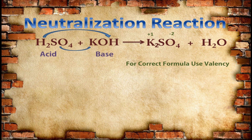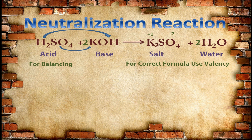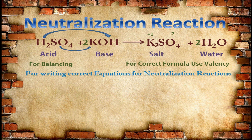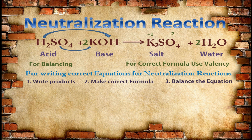This is the formula of the salt K₂SO₄ and H₂O is water. You need to balance the equation — potassium is not balanced, so write 2 with KOH and 2 with water to balance hydrogen. For writing the correct equation for any neutralization reaction, follow three simple steps: step one, write the products according to double displacement reaction; step two, make the correct formula of the salt using valency; step three, balance the equation.